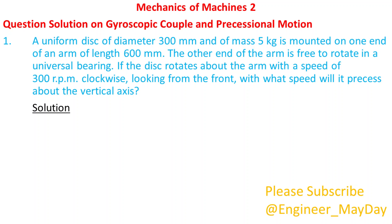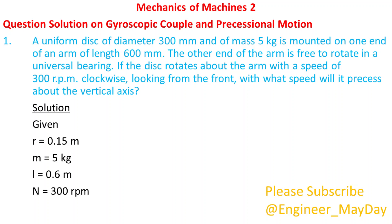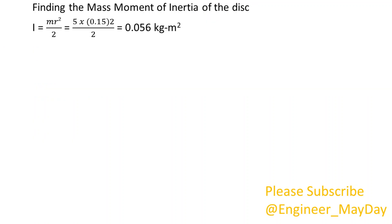Solution. Given: R equals 0.15m, M equals 5kg, L equals 0.6m, N equals 300rpm. Finding the mass moment of inertia of the disc: I equals 0.056 kg·m².